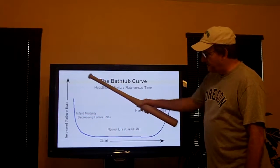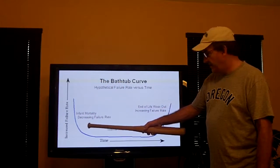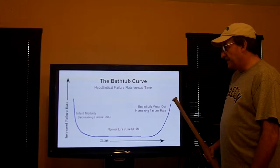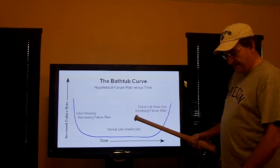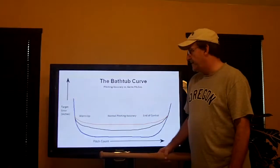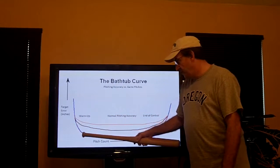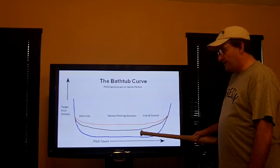The bathtub curve has your wear-in period, your normal life, and your wear-out period. The PA metric in baseball is essentially the same thing: you have your warm-up pitches, your normal pitch count with a low failure rate.